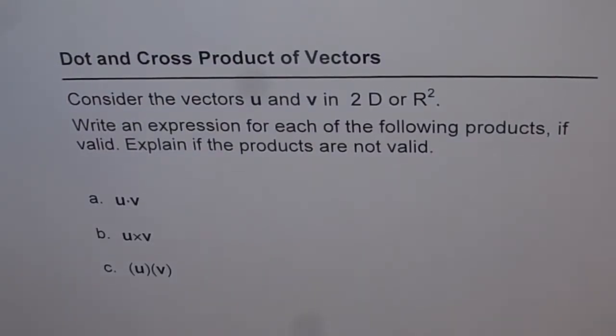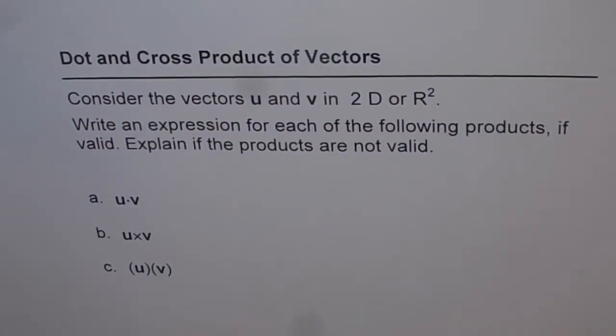Here are a few knowledge-based questions on dot and cross product of vectors. Consider the vectors u and v in 2D or R². Write an expression for each of the following products if valid. Explain if the products are not valid.